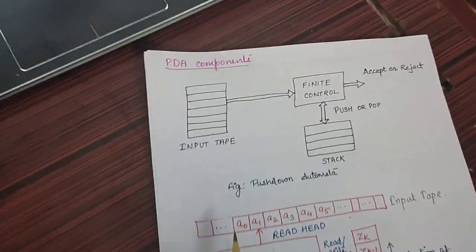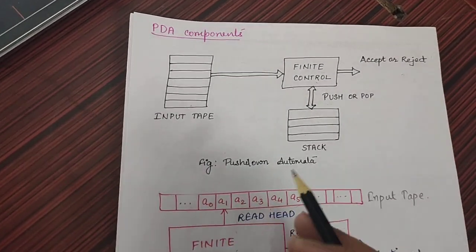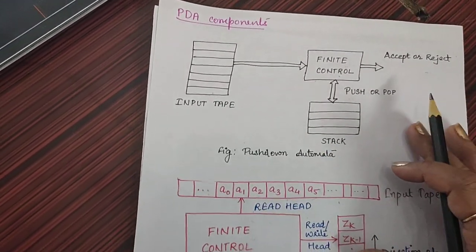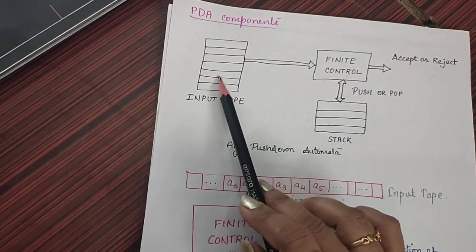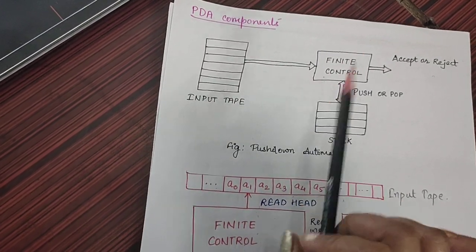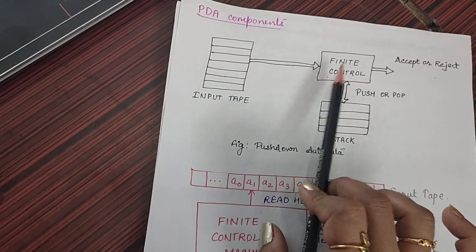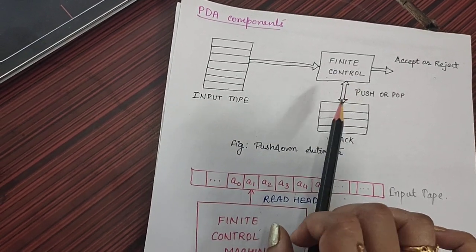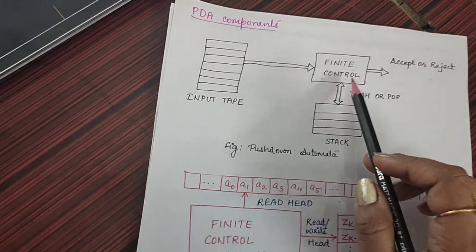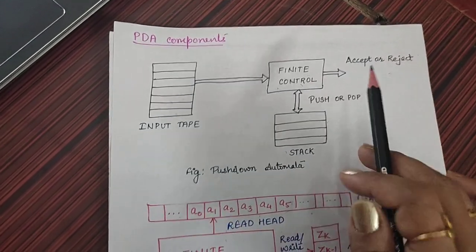Now, what are the components of pushdown automata and how will the structure work of this kind of machine? There are three basic components: the input tape, the finite control, and the stack. Input tape is connected to finite control. Finite control is connected to stack through which we can perform push or pop operation. And this finite control will give us an output in the form of accept or reject.